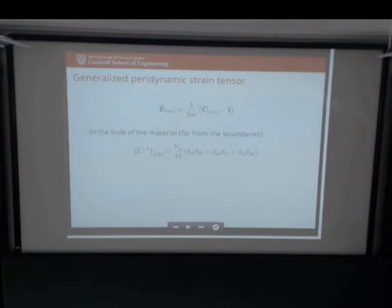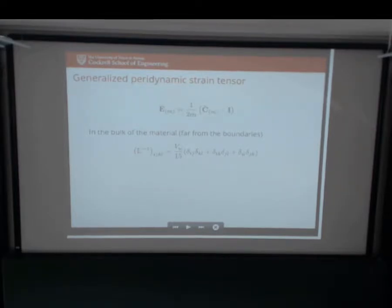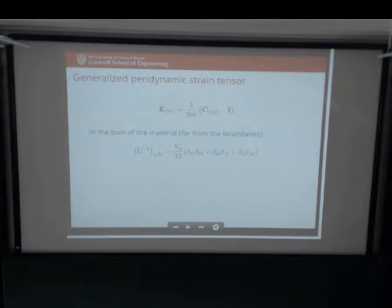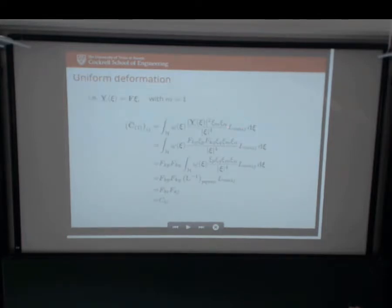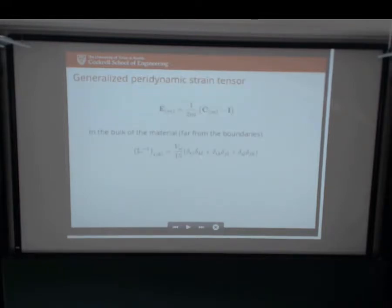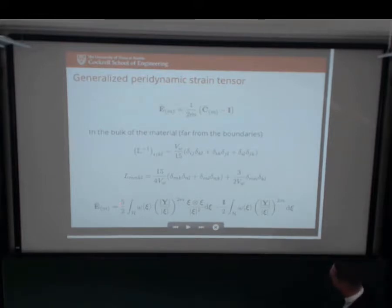In the bulk of the material, we can analytically evaluate the integrals in spherical coordinates for that fourth-order moment matrix. It evaluates to a scalar constant we call a weighted volume - we can evaluate it in closed form and invert it in closed form. And if I plug that back into the definition for E - it looks different, but lo and behold, this is Tupac's E. There's that strange five-halves, there's a one-half - this is identically equal to his strain measure. This is only true in the bulk of the material where I can do this inversion analytically. Around the boundaries, or for any irregular boundary, I have to invert numerically - but that gives me the correction so I don't have softened material parameters around boundaries.